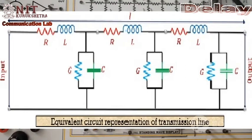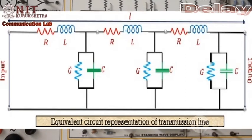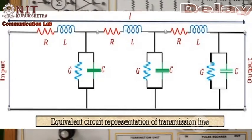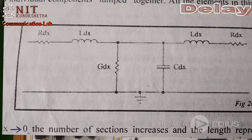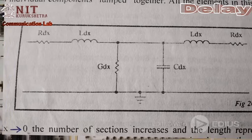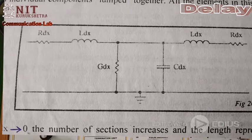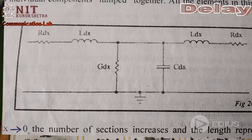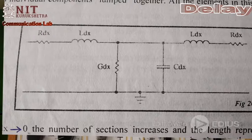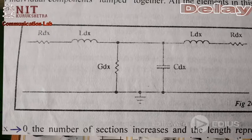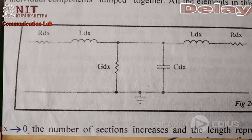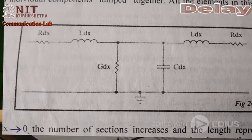This is a distributed line. When we consider a small portion of the line of length dx, these parameters become Rdx for resistance, Ldx for inductance, Gdx for conductance in shunt, and Cdx for capacitance connecting the two wires. When dx tends to zero, the number of sections increases and the length represented by each section decreases.